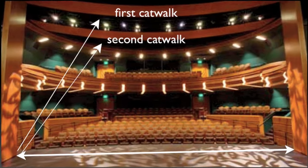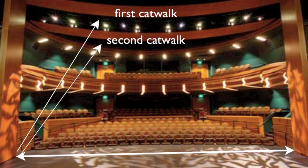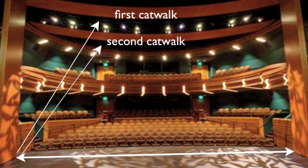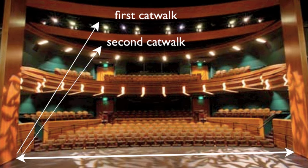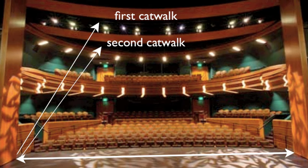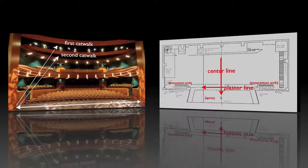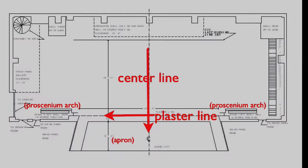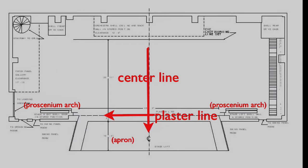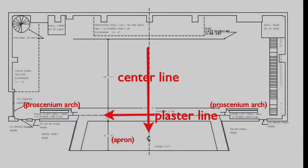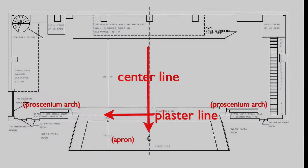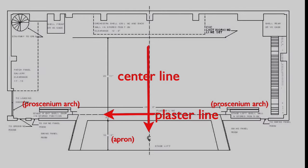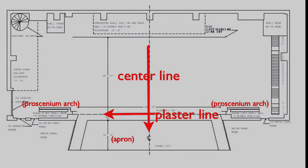First catwalk, second catwalk, and so on start from the plaster line and go toward the back of the house. Also, set designers use the plaster line along with the center line of the stage as reference points when designing and creating set plans.